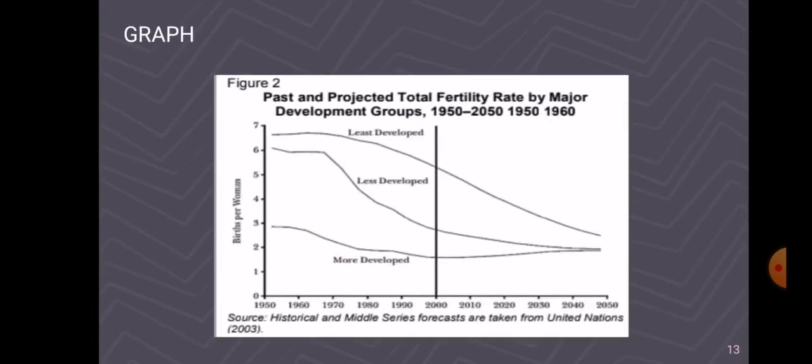This graph shows us the past and projected total fertility rate by major development groups from 1950 to 2050. This graph shows us that our population has decreased.